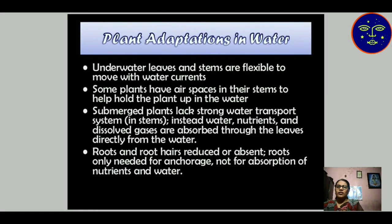Plant adaptation in water: underwater leaves and stems are flexible to move with water current. Some plants have air spaces in their stems to help hold the plant up in the water. Submerged or half-floating plants lack a strong water transport system; instead, water, nutrients, and dissolved gases are absorbed directly through the leaves from the water. For rooted underwater plants, roots are reduced or absent — they are only needed for anchorage, not for absorption of nutrients and water.